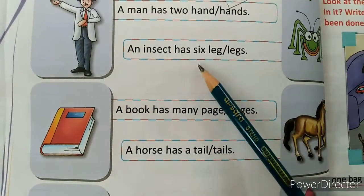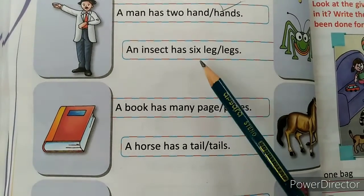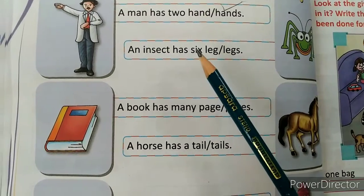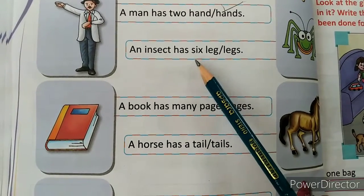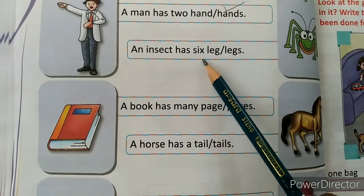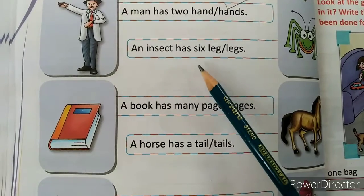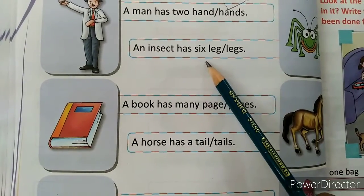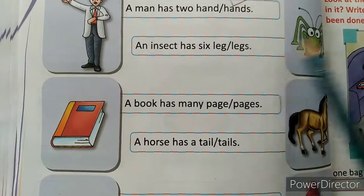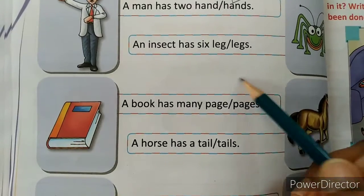Next one: 'An insect has six legs' or 'legs'. Six is written here, meaning more than one. If one were written, it would be singular, but since it is more than one, it will be plural. So tick on 'legs'.